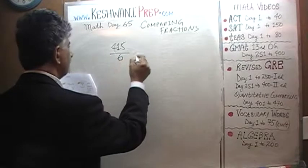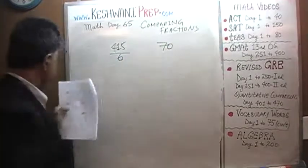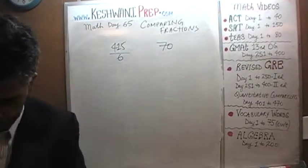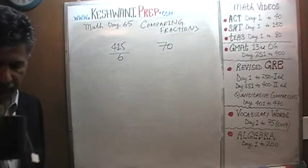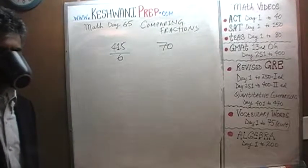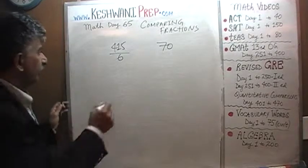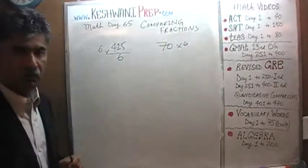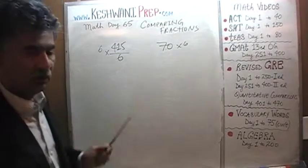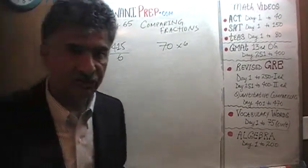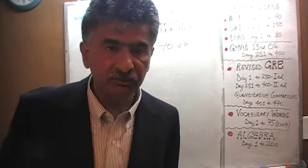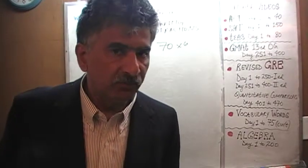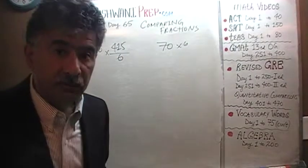415 over 6 versus 70. 415 divided by 6 versus 70. Now it's very straightforward. Multiply both quantities by 6. Notice how I phrased it, how I phrased the sentence. I said multiply both quantities by 6. I did not say multiply both fractions by 6 because I didn't want to freak you out.